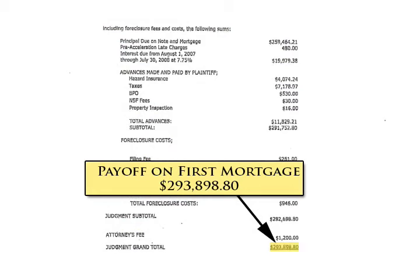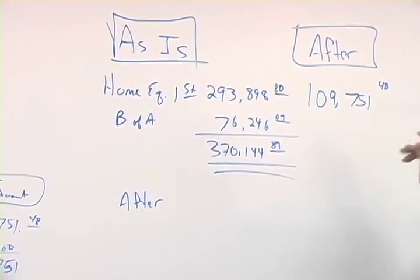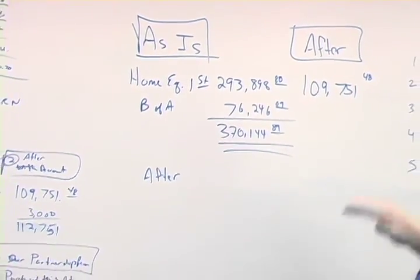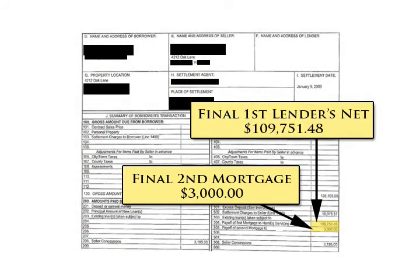As a matter of fact, we're going to give you a screenshot right there of Home Equity. There's their payoff balance of $293,898.80 right there, guys. There's the payoff statement. Now, here's the acceptance letter showing that they accepted $109,751.48 in black and white. That's on their letterhead. As you can see, this is a verified payoff statement. Now, they actually netted $109,751.